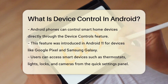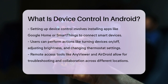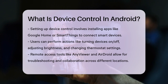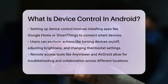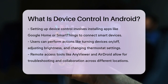To set this up on a Google Pixel, you would install the Google Home app, connect your smart devices and add them to your favorites list. On a Samsung Galaxy, you would use the SmartThings app to connect and control your smart devices. Once set up, you can turn devices on or off, adjust brightness, change thermostat temperatures, and even watch live feeds from cameras.